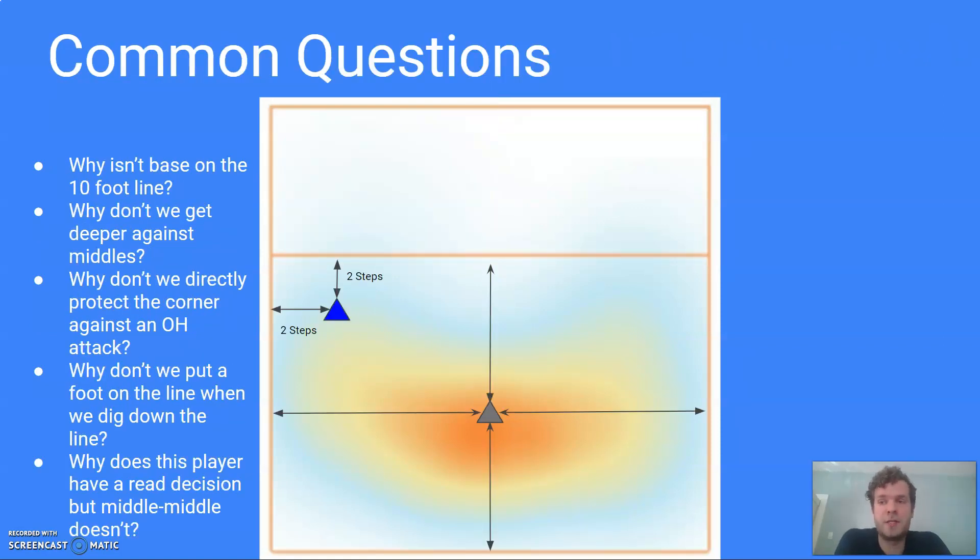So common questions with this. Why don't we put base on the 10-foot line? It would help us cover dumps. And it's really just that a lot of high school teams can run plays so fast that if we start there on the 10-foot line, we can't get off quick enough to play something. We also know that almost nobody actually hits the 10-foot line.